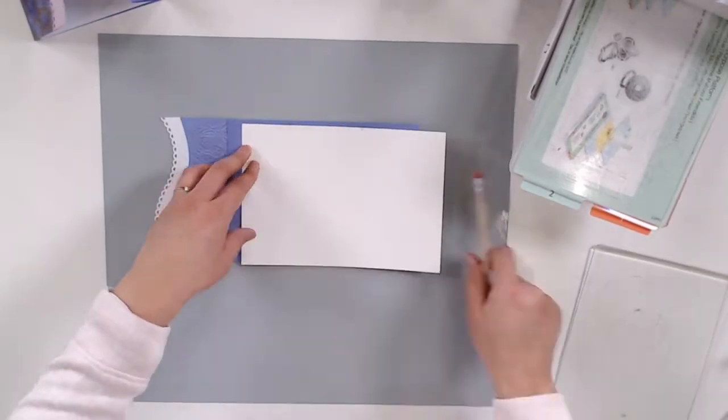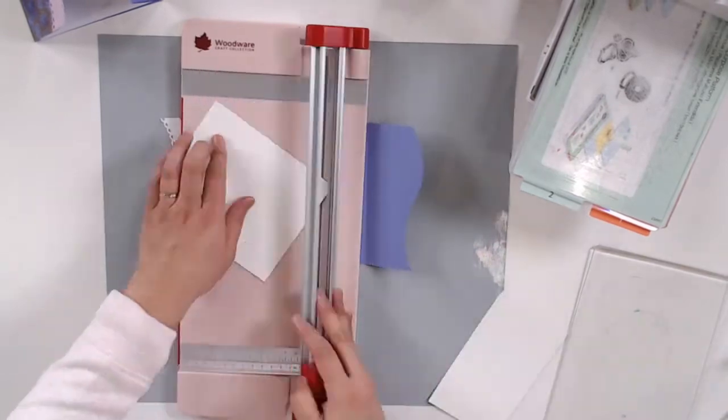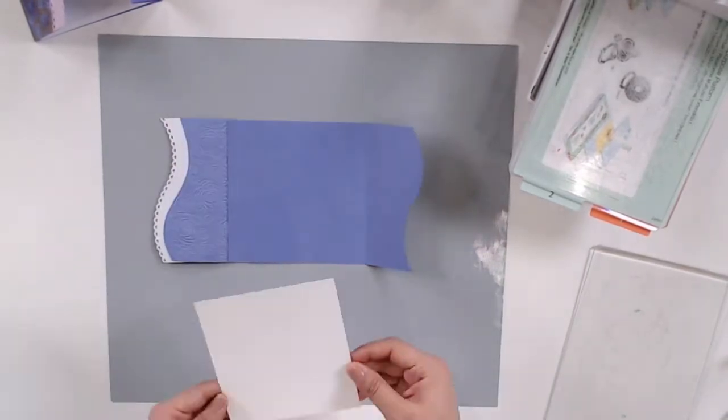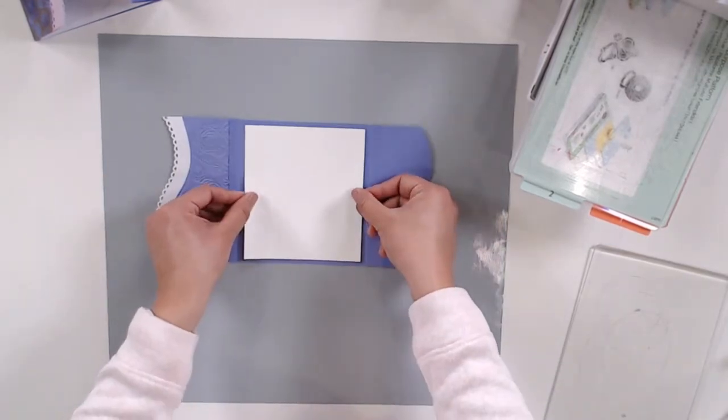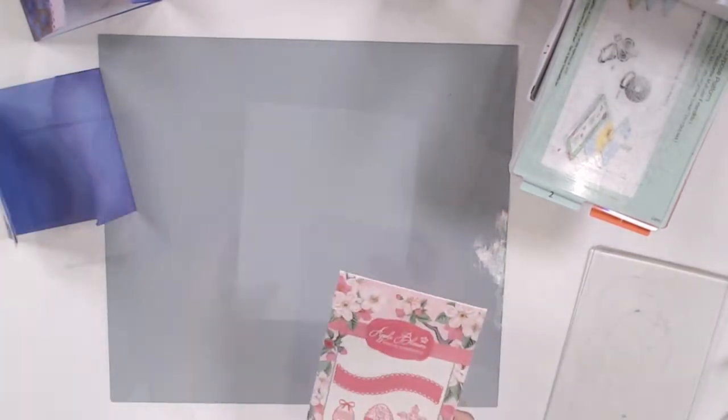I want to create a white mat for the inside of my card, so I'm using a piece of white cardstock and eyeballing where I want to trim it down and just marking it with a pencil. But if you want to be precise, then definitely use a ruler to get exact measurements.